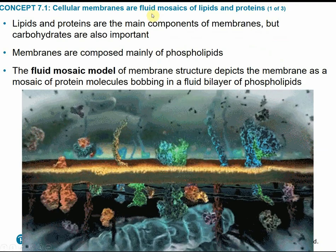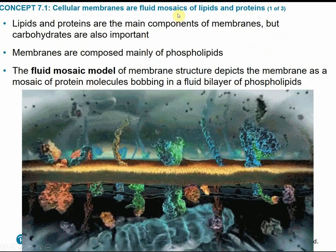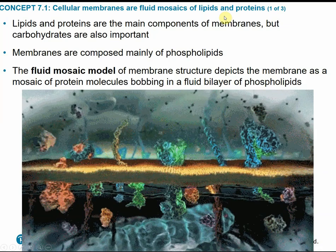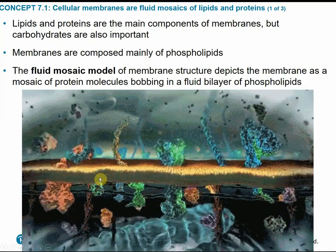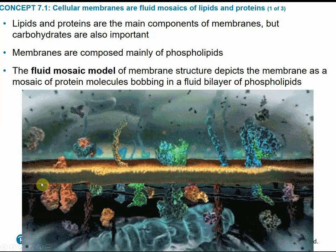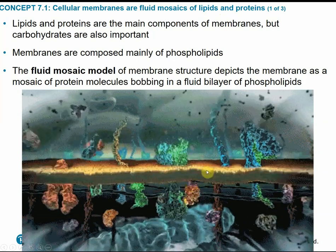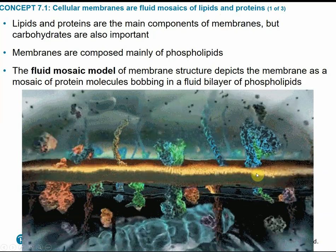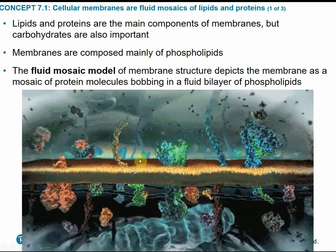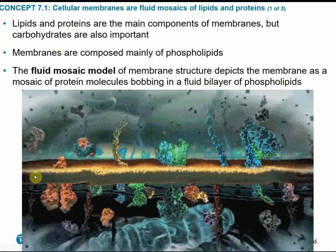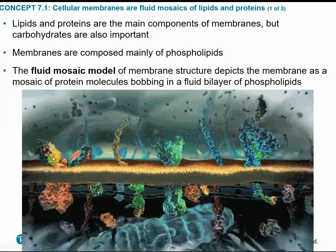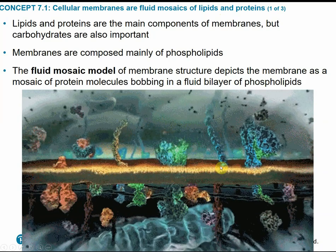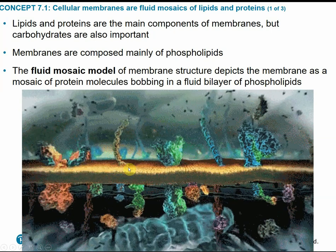Cell membranes are considered to be fluid mosaics of mainly lipids with some interspersed proteins. The primary component of the cell membrane is the phospholipid bilayer, and throughout the membrane we have different proteins embedded. Some are permanently fixed in the membrane and some are able to float and bob around. It's called the fluid mosaic because the membrane is fluid — kind of an oily, wiggly consistency — and mosaic because we have lots of small pieces working together to make up the whole picture of the membrane.